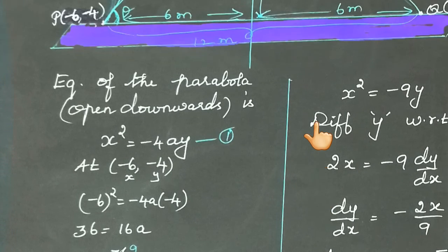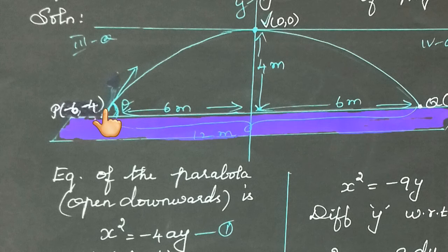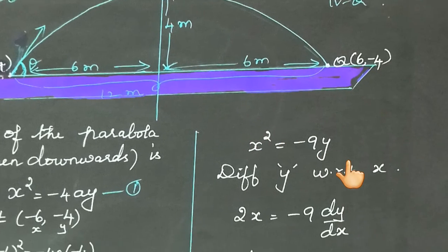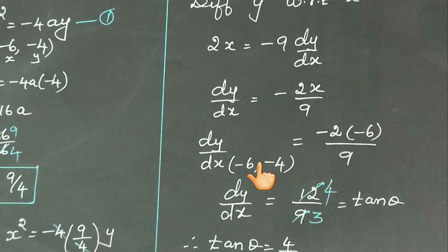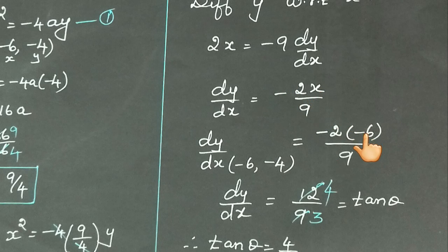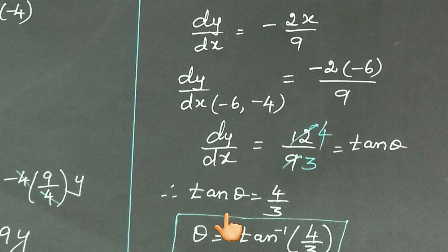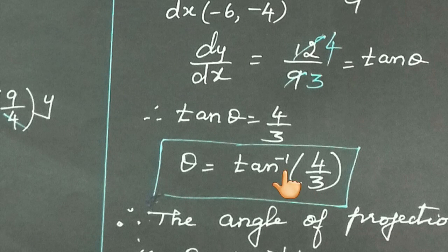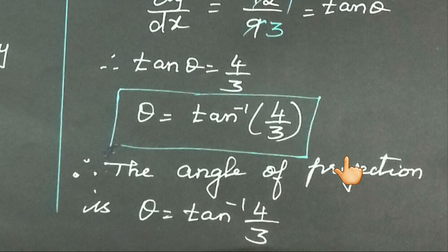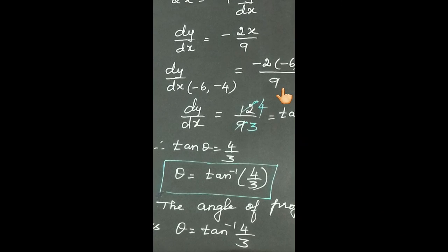At the point of projection (−6, −4), substitute x = −6 into dy/dx = −2x/9: dy/dx = −2 × (−6) / 9 = 12/9 = 4/3. Since dy/dx = tan θ, we have tan θ = 4/3. Therefore, the angle of projection is θ = tan⁻¹(4/3). Thank you children.